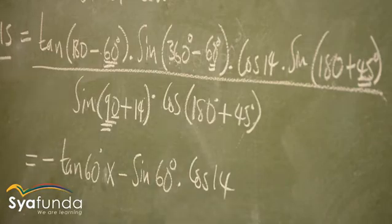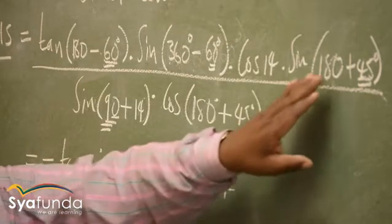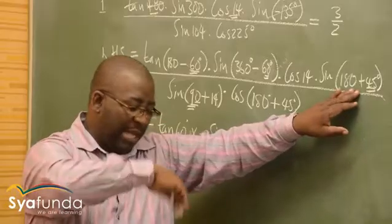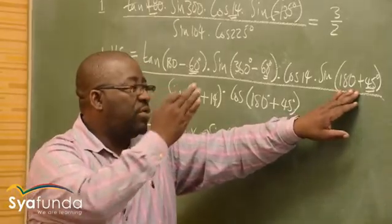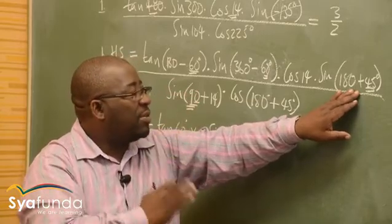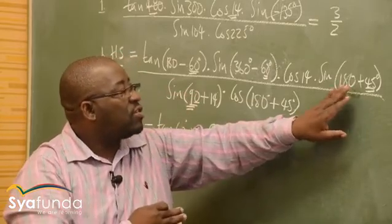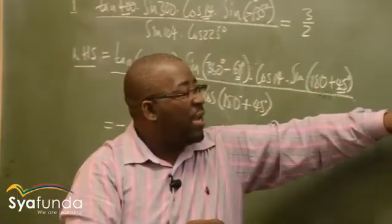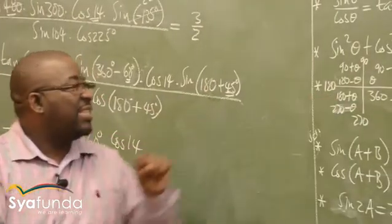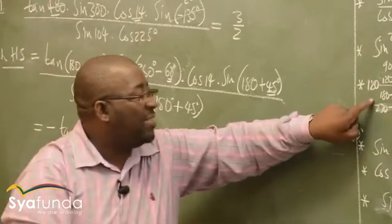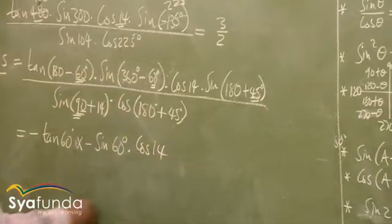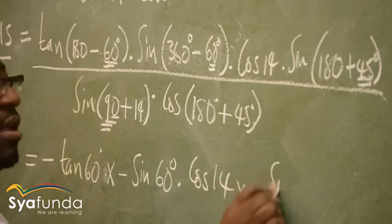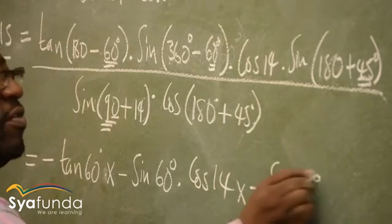Let's go to the last one. You start where there are brackets: 180 plus. Which quadrant is 180 plus? That is the third quadrant — where only tan is positive. So how is sine in the third quadrant? Sine is negative there. Therefore it will be times negative sine of 45.